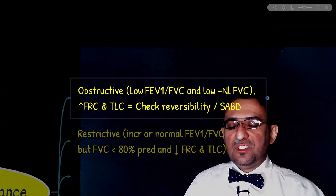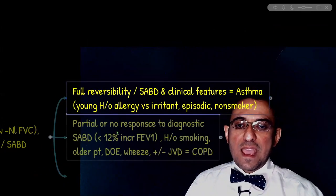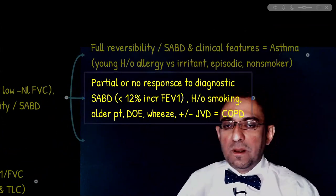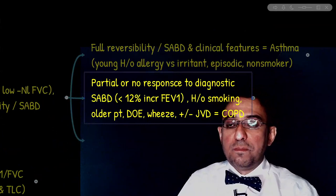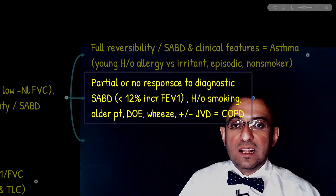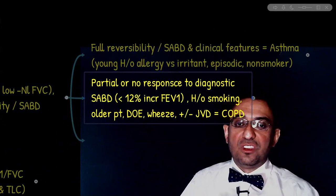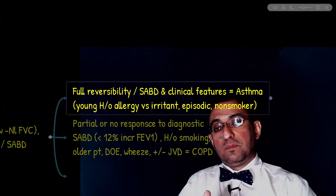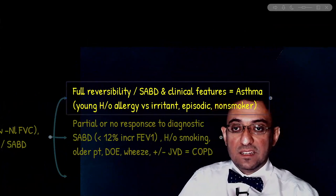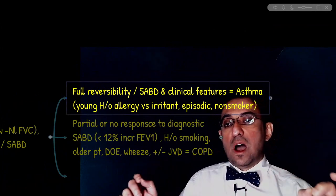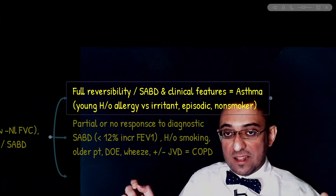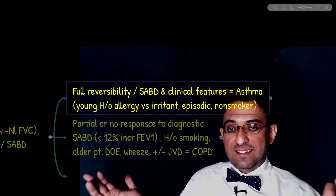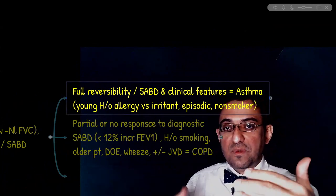The way we distinguish asthma from COPD is based on the initial response to short-acting beta dilators. If there is full reversibility of clinical features and pulmonary function test indices with short-acting beta dilators, that is asthma. Specifically, if FEV1 increases more than 12% — or at least 200 milliliters in volume — that indicates asthma. The patient is usually asymptomatic between episodes.